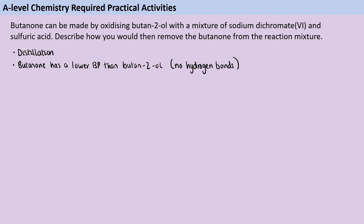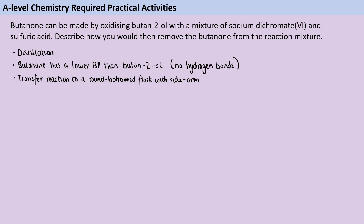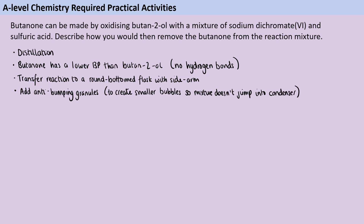To distill this mixture, we're going to need a round bottom flask. This needs to have a sidearm so that we can attach a Liebig condenser and therefore collect the product as it's being distilled off. Into that round bottom flask, we're going to add some anti-bumping granules, which are there to prevent bumping. In other words, they're going to make sure that any bubbles forming are only small bubbles and that we don't have the whole mixture splashing up and going into the condenser.